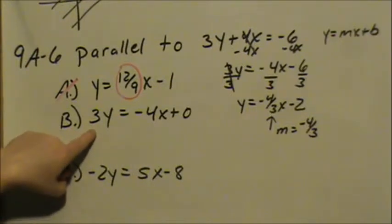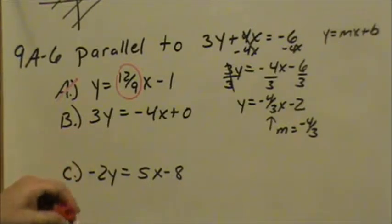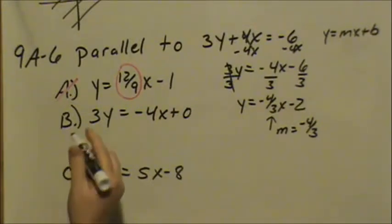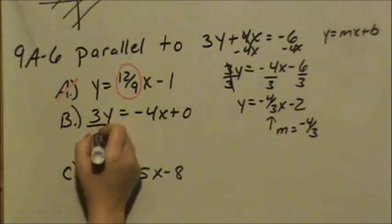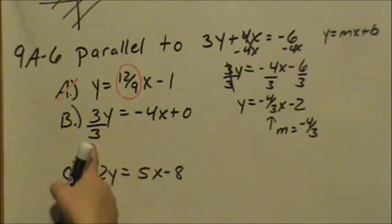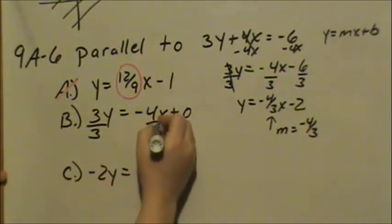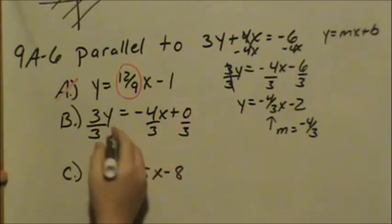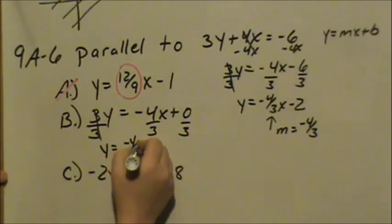Now we look at B. In order to determine the slope, it has to be in slope intercept form. This is not in slope intercept form, so to get it into slope intercept form, we have to divide by 3. We need to get rid of the 3 in front of the y. If we divide that by 3, we have to divide every term by 3, which means this would be y equals negative 4 thirds x. 0 divided by any number is still just 0.